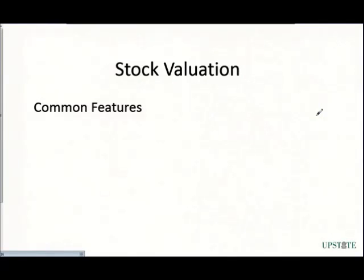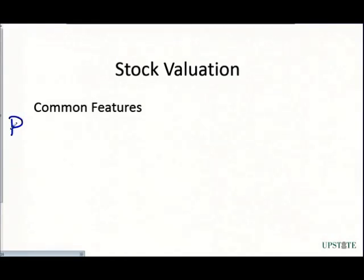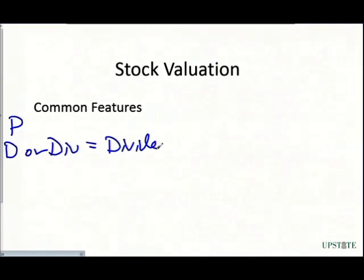When we look at stock valuation, there are some things that are going to be common among all the models we're going to look at. These are some terms we're going to introduce. One of which is P — we've seen this before — P is generally going to refer to a price. D, or DIV, refers to our dividends.